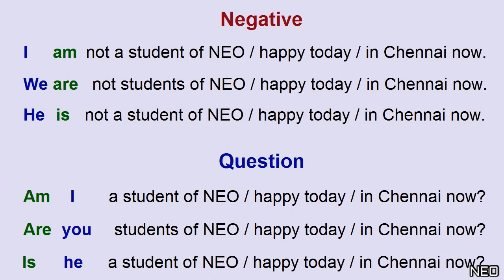Negative: I am not a student. We are not students. He is not a student. Question: Am I a student? Are you students? Is he a student?